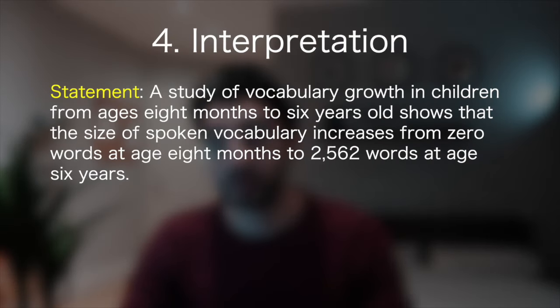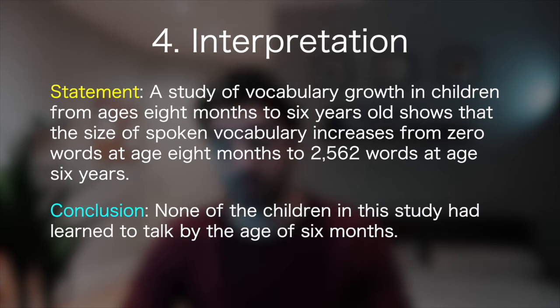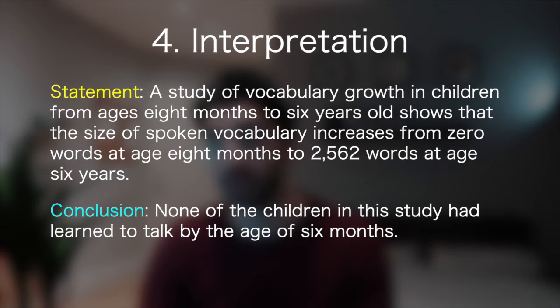The statement might be: a study of vocabulary growth in children from ages eight months to six years old shows that the size of spoken vocabulary increases from zero words at age eight months to 2,562 words at age six years. The proposed conclusion might be that none of the children in this study had learned to talk by the age of six months. Forget everything you know, and the only information you have is in the statement given. Here, if they had a vocabulary of zero words at eight months, it seems quite clear that at six months — two months before — they probably also didn't know how to talk. So here you can say that it does follow.